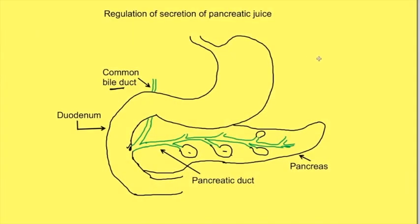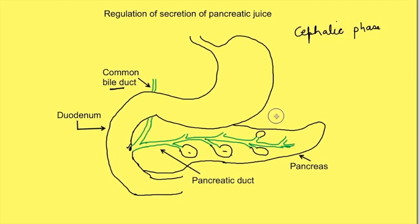Pancreatic enzymatic secretions occur in three phases. The thought, smell, and taste of food causes pancreatic stimulation by the vagus nerve. This is known as the cephalic phase. The vagus nerve releases acetylcholine, which acts on acinar cells as well as on duct cells.